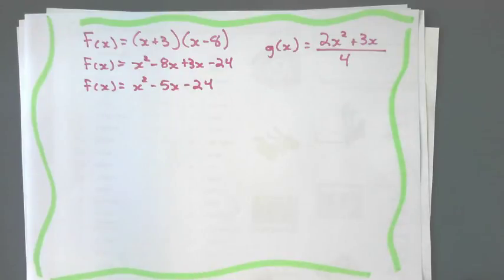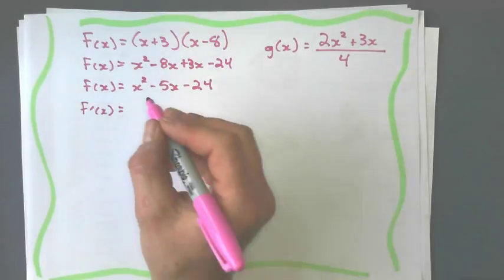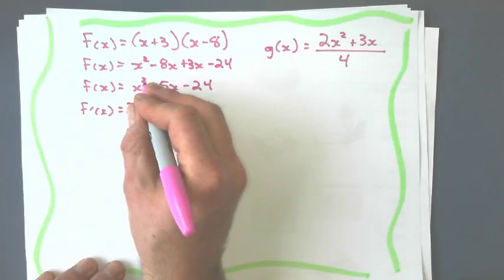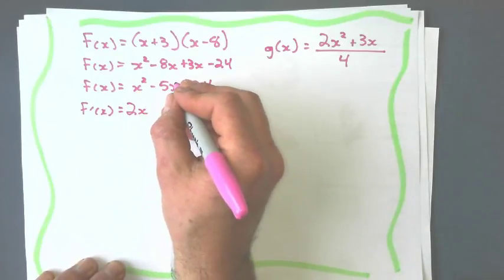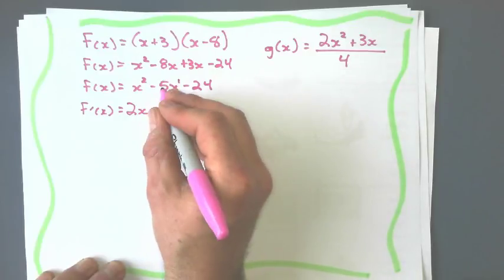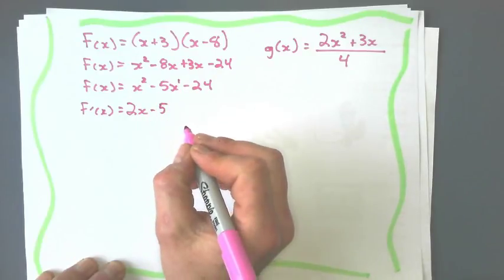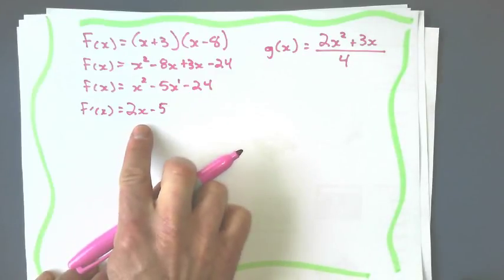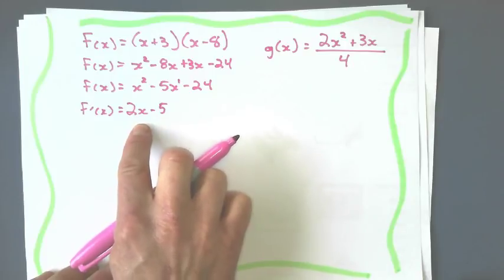Now I'm ready to do the calculus, differentiating each term. And the gradient function is quite simple. Bring the 2 in front of the x. And take 1 off the exponent. That makes it 1. There's a little 1 right there. Bring that in front. Multiply it by the negative 5. That's negative 5. And this turns to 0. So that is my gradient function. That is the derivative function right there.